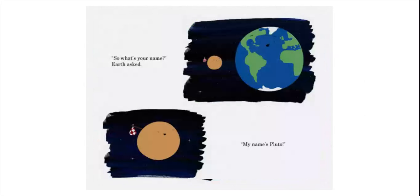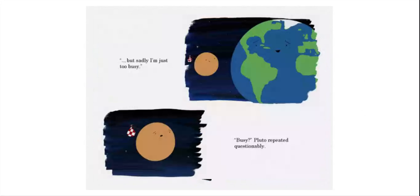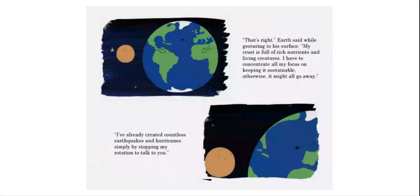So what's your name, Earth asked. My name's Pluto. I've been traveling through the solar system in search of new friends. Would you like to be my first one? It's nice to meet you, Pluto, said Earth, and I would love to be your friend. But sadly, I'm just too busy. Busy? Pluto repeated questionably. That's right, Earth said while gesturing to his surface. My crust is full of rich nutrients and living creatures. I have to concentrate all my focus on keeping it sustainable. Otherwise, it might all go away. I've already created countless earthquakes and hurricanes simply by stopping my rotation to talk to you.